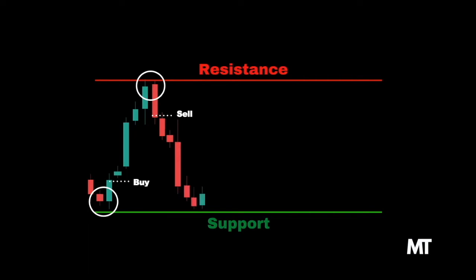Market ranges are simply phases in which the price is resting and gaining liquidity for the next movement. In market ranges, price is trapped between a support and resistance level.